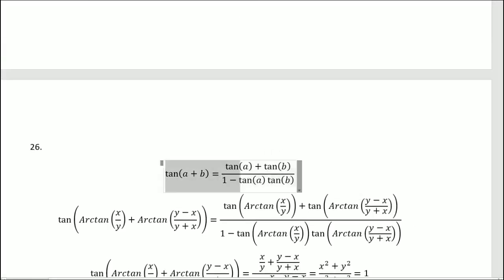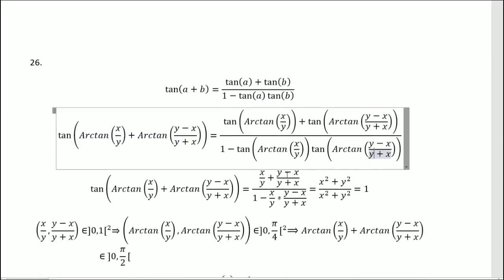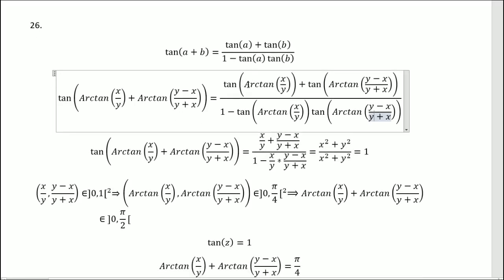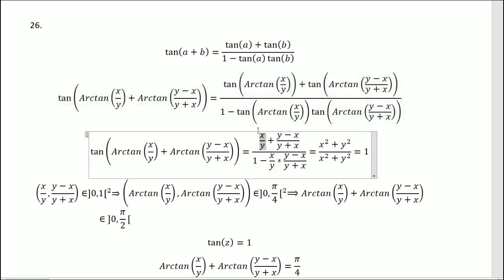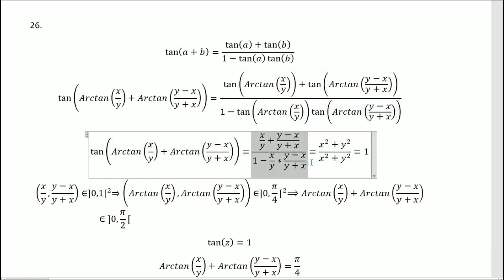So we have this formula, it comes from properties of tangent. So then we apply a to be this arctangent, and b to be equal to that arctangent. So we get this. We have tangent of arctangent, so we can just remove it, because it's equal to the identity. And we have tangent of arctangent here as well, so we get this. And we have this here and here as well. So by simplifying, we get that it's equal to x squared plus y squared divided by x squared plus y squared, that is equal to 1.